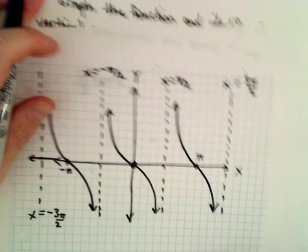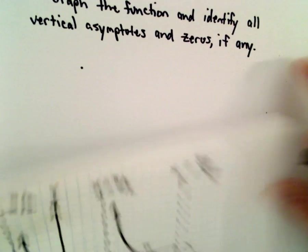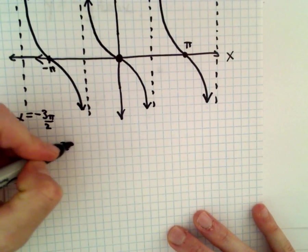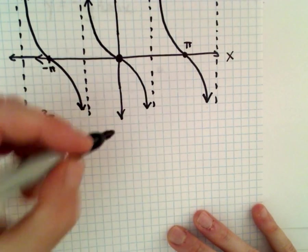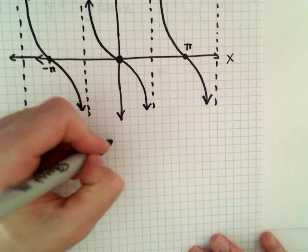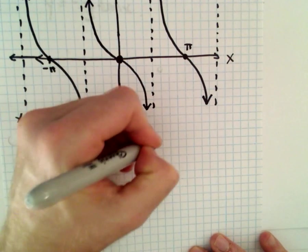Okay, so the zeros in this case—the zeros—those are going to occur at multiples of pi, so we'll say pi times n where n is an integer.